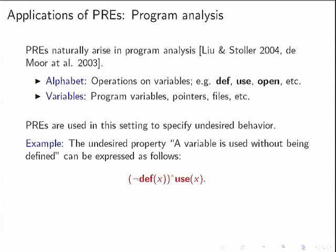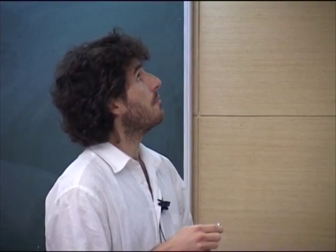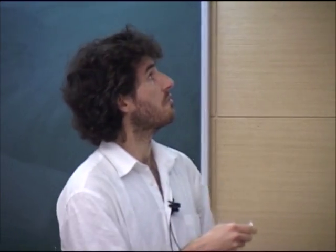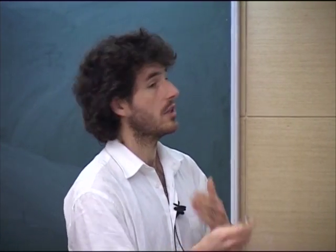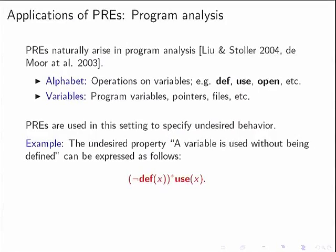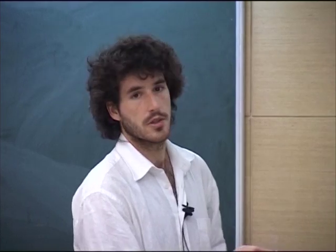Now let me turn to the possibility case: program analysis. In program analysis, we have an alphabet of operations and variables that act as placeholders for different data — pointers, files, and so on. We might want to specify some undesired behavior, such as: anything in my language that is NOT 'define x then use x' — that is, use x before it has been defined.